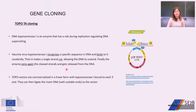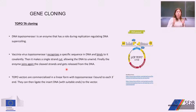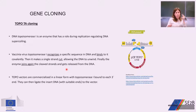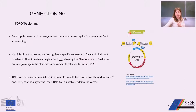Another gene cloning method is TOPO-TA cloning, which uses the enzyme DNA topoisomerase I. DNA topoisomerase I regulates DNA supercoiling during replication by recognizing a specific sequence, binding to it covalently, making a single-strand cut to allow DNA to unwind, and then rejoining the cleaved strands. This enzyme acts as both a restriction enzyme and a ligase. TOPO vectors are commercialized in linear form with T overhangs and topoisomerase attached to the 3-prime end, which ligates the insert with A overhangs into the vector.